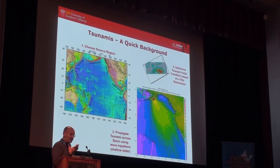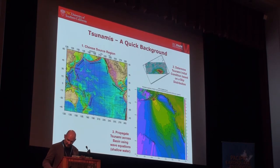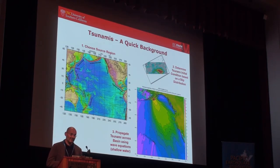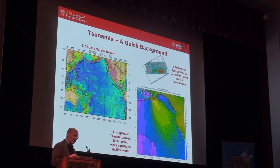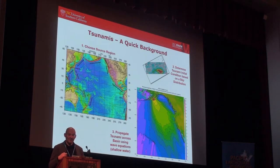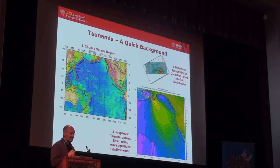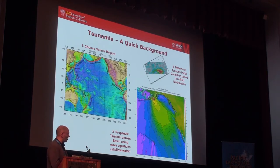The way that we generate a tsunami when we talk about seismic tsunamis is we specify an earthquake somewhere — for example, a large earthquake on the Alaska Aleutian subduction zone. What becomes very important for us is the distribution of that slip, because that slip distribution controls the amplitude of the tsunami at generation. How we distribute that slip for a given earthquake is still one of our largest sources of uncertainty. Once we have that slip distribution, we use theory to turn that into a tsunami initial condition, and then we use wave equations to propagate that across any basin.